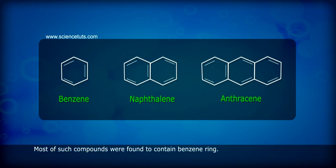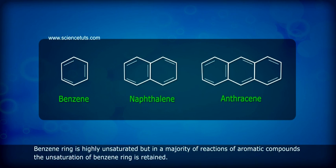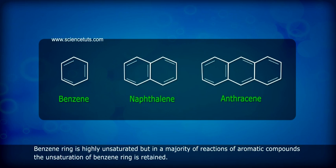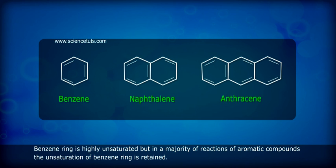Most of such compounds were found to contain a benzene ring. The benzene ring is highly unsaturated, but in the majority of reactions of aromatic compounds, the unsaturation of the benzene ring is retained.